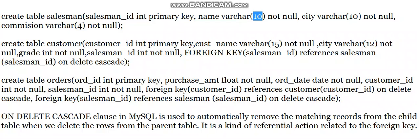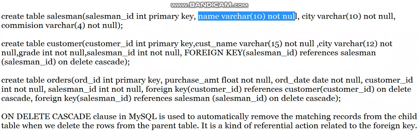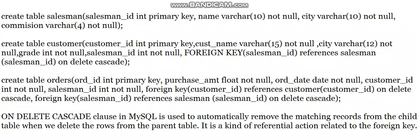The name length of 10 characters can be changed to 15 or 12 as needed. I am adding a NOT NULL constraint, meaning the salesman name must always be provided. For the primary key attribute, I am NOT adding a NOT NULL constraint because it is already mandatory by default for primary keys.